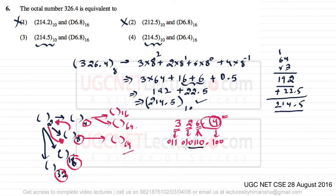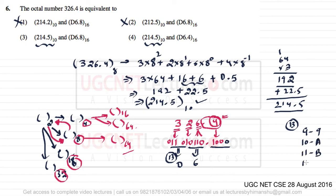To convert this binary number to base 16, group the bits into pairs of 4. The first group represents 6, and the second group represents 13. In hexadecimal, 10 is A, 11 is B, 12 is C, 13 is D, 14 is E, 15 is F. So 13 is D, giving us D6 before the point, and the fractional group represents 8, which is 8 in hex. Therefore the hexadecimal value is D6.8, and the correct answer is option number 3.